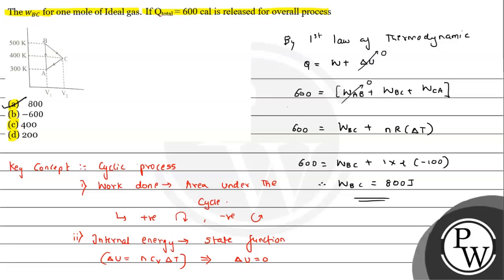One important note: if this question were in chemistry, we find work done by the system, which is opposite to work done by the gas. So the answer would be minus 800 joules. That is the key difference between the first law convention in chemistry versus physics. Here, since we considered work done by the gas, the answer is W_BC = 800 and option A is correct. I hope you understood the solution — all the best!